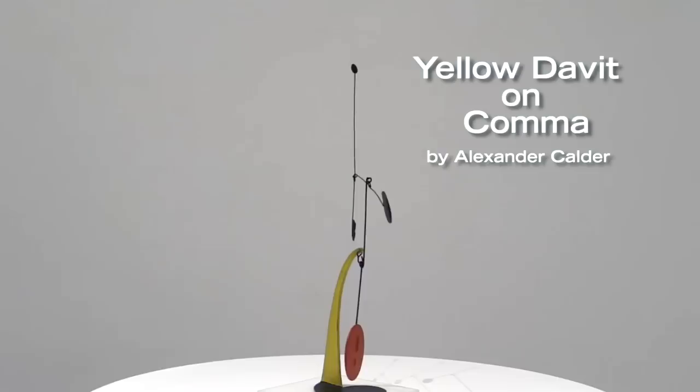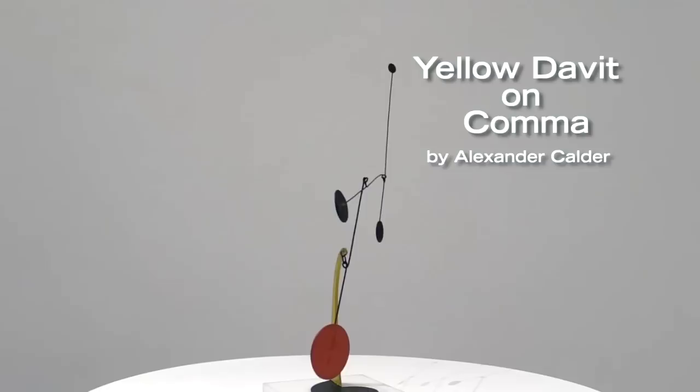This is Yellow Davit on Kama, a mobile sculpture by the American artist Alexander Calder.